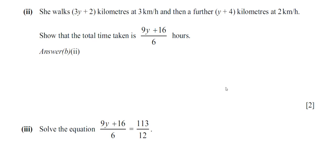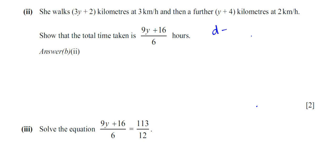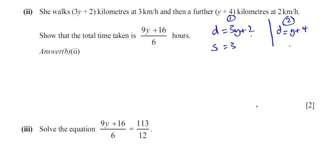She walks 3y plus 2 kilometers at 3 kilometers per hour, and then a further y plus 4 kilometers at 2 kilometers per hour. Show that the total time she takes is given by 9y plus 16 over 6 hours. The distance for the first part is 3y plus 2 kilometers at 3 kilometers per hour, and the second part is y plus 4 kilometers at 2 kilometers per hour.